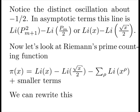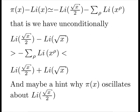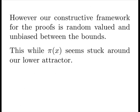Now let's look at the Riemann prime counting function and see what we can see. And now these terms are making sense. What we have to explain here is the sum of the terms using the zeta zeros. We can rewrite this as our error term and some other terms. And this shows us that we have unconditionally that we can squeeze the zeta term into these bounding regions. And it might give us a hint about why we have these oscillations. However, our constructive framework for the proofs is random-valued and unbiased between the bounds. This while pi of x seems stuck around our lower attractor.